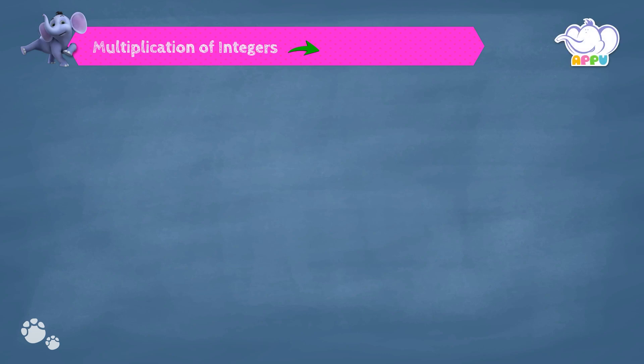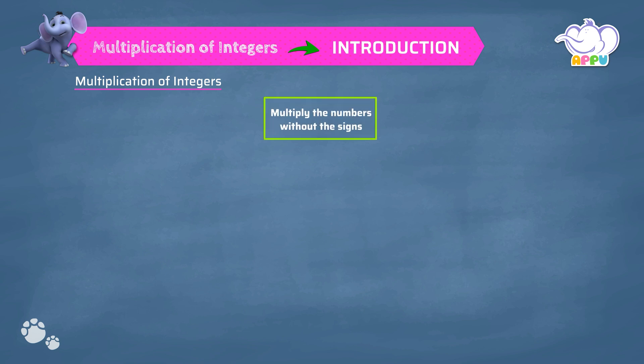Multiplication of integers. Let's multiply integers. To multiply integers, Step 1: multiply the numbers without the sign.